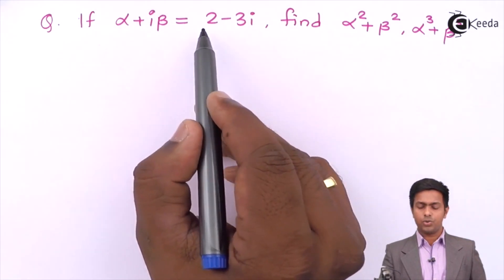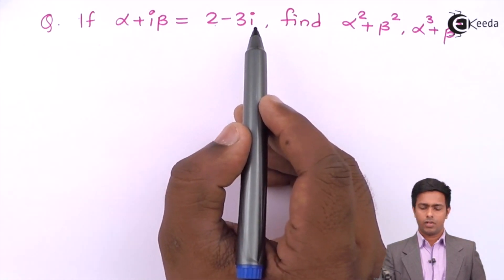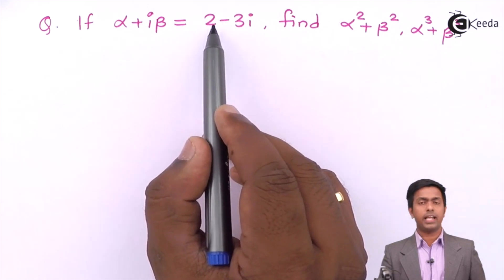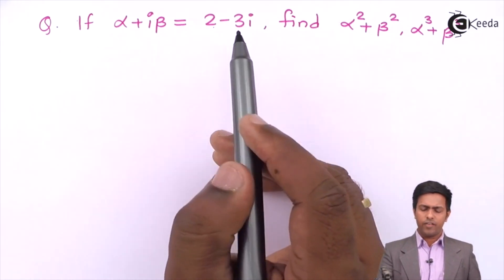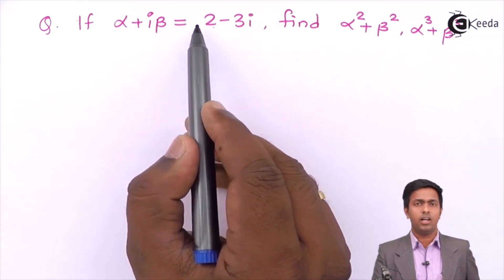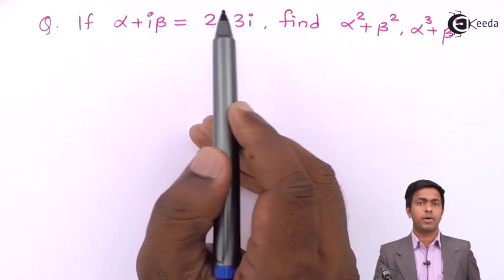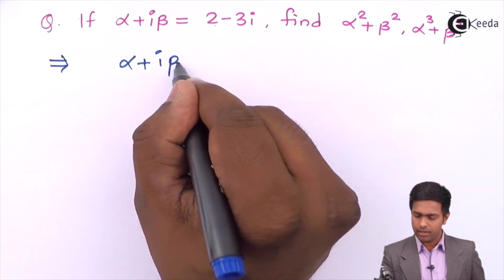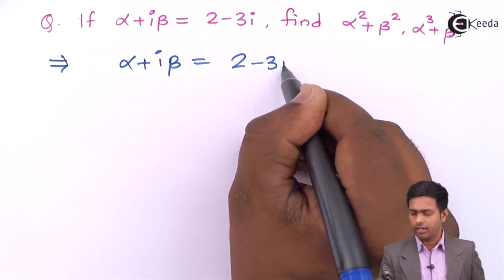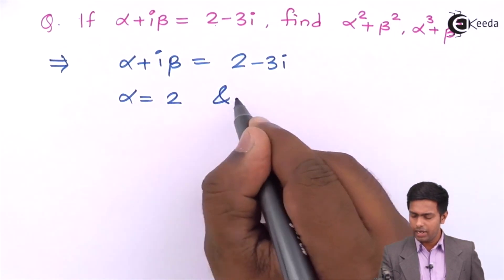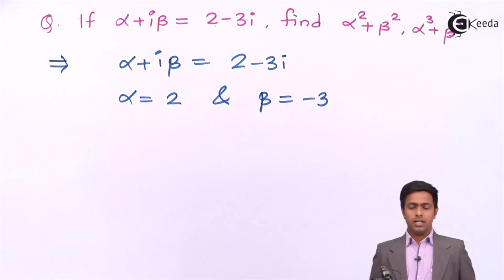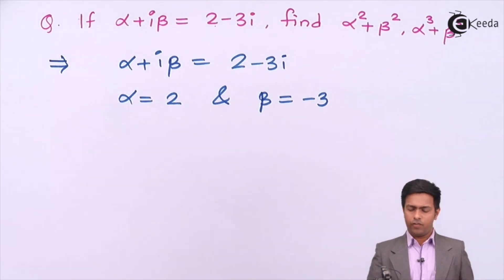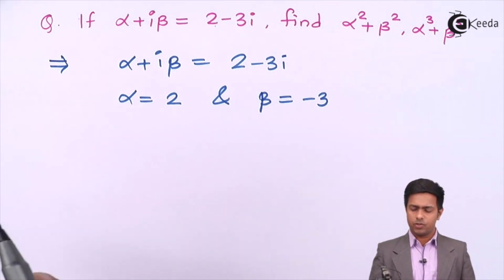In this case, alpha plus i beta equals 2 minus 3i. Since these two numbers are equal, the real part is equal and the imaginary part is equal. Therefore, alpha equals 2 and beta equals minus 3, because only then does this statement hold true. So now we have the values of alpha and beta, and we will substitute these values to get the answer.